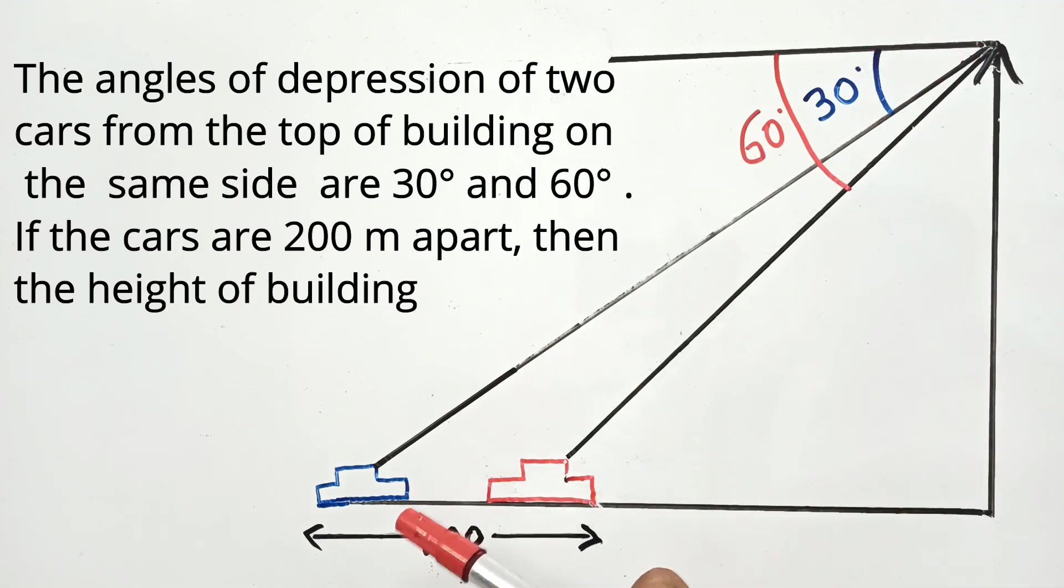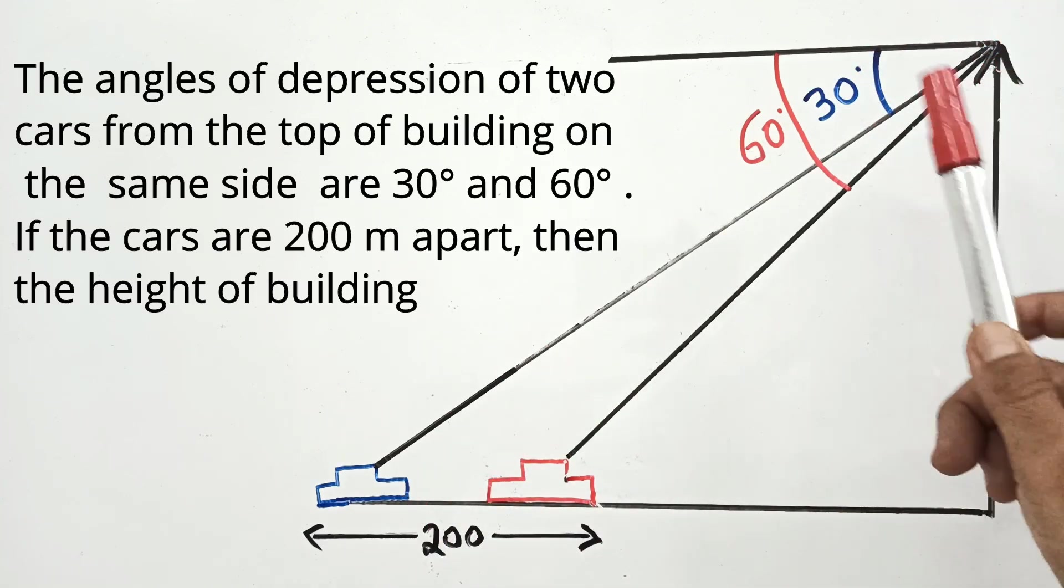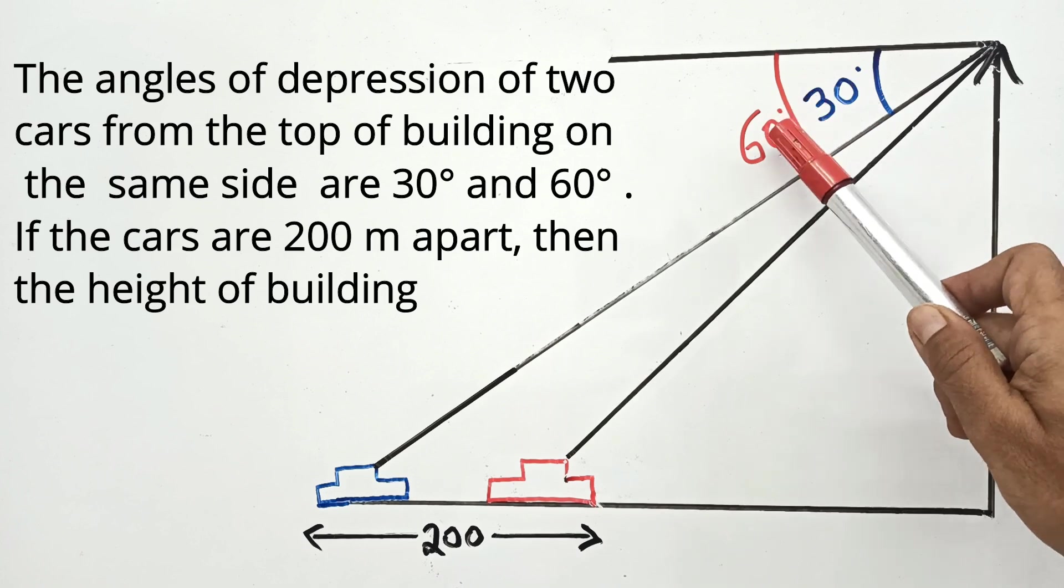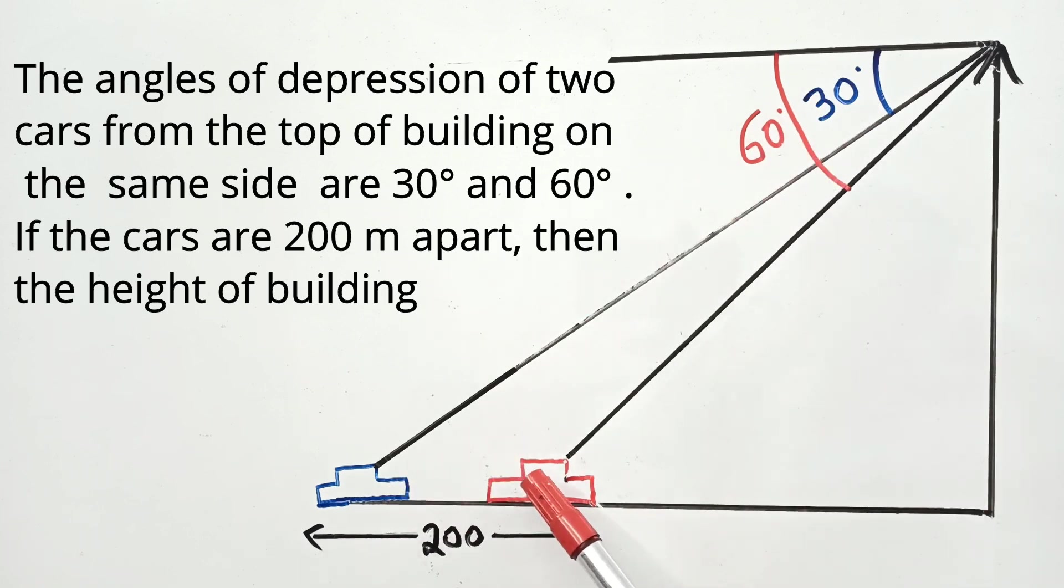The angles of depression of two cars from the top of a building on the same side are 30 degrees and 60 degrees. If the distance between the two cars is 200 meters, find the height of the building.